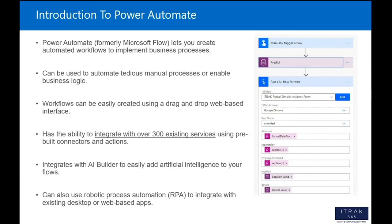Power Automate also integrates with AI Builder to easily add artificial intelligence to all of your flows. You can also use a feature called Robotic Process Automation to integrate with existing desktop or web-based apps.